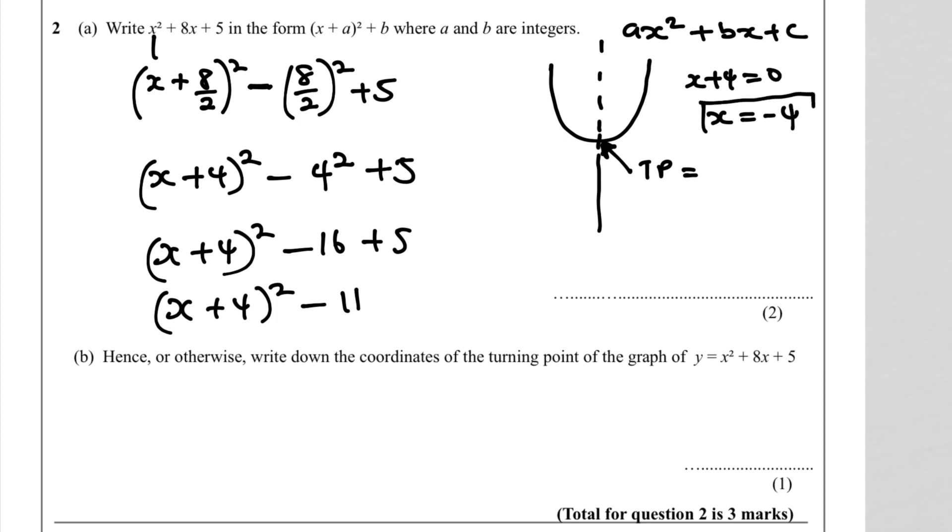x = -4 is the equation for the line of symmetry, so it's also the x-coordinate at the turning point. From (x+4)² - 11, the x-coordinate at the turning point is -4.